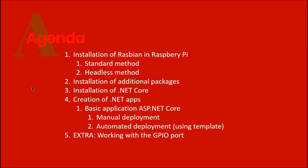The second agenda point is the installation of additional packages, the third is the installation of the .NET Core runtime in order to run our applications, and finally the creation of .NET Core apps. The first is a basic ASP.NET Core API to run a server on the Raspberry Pi. We'll cover both manual deployment and automated deployment — we'll focus on automated because it doesn't waste your time.